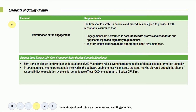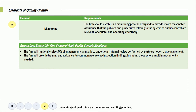Let's move on to the M — the monitoring that we're going to do. The firm should establish a monitoring process designed to provide it with reasonable assurance that policies and procedures relating to the system of quality control are relevant, adequate, and operating effectively. Great ways to do that include peer review and your own internal quality review. A firm will randomly select 5% of engagements annually to undergo an internal review. The firm will also provide training and guidance for common peer review inspection findings, including those where appropriate improvements are needed.